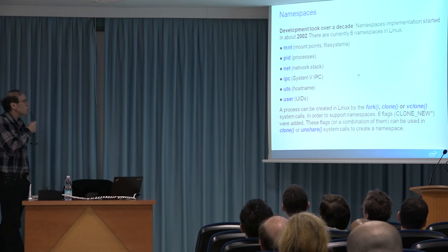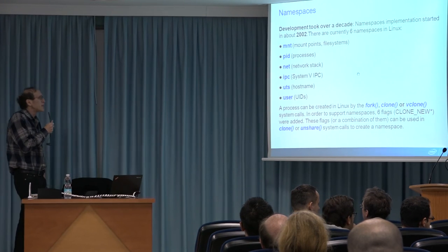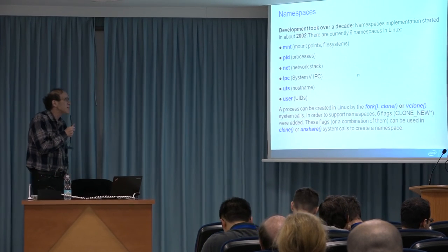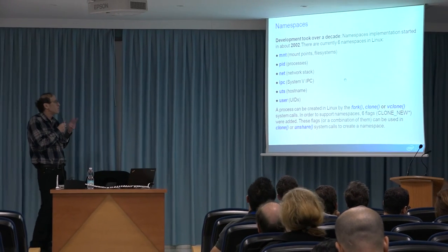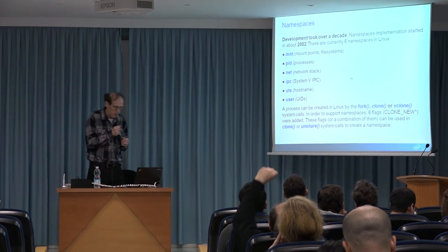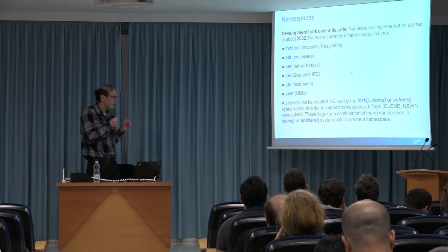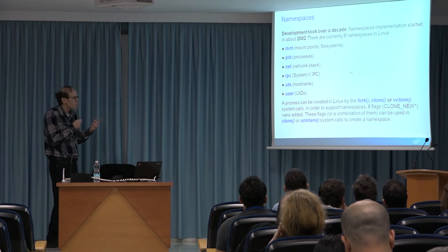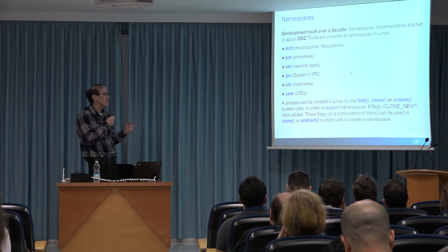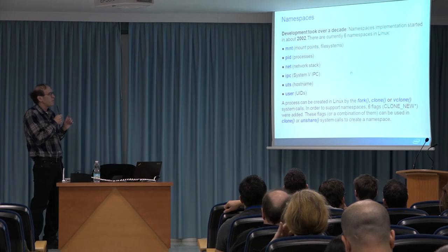I will continue now to talk about namespaces. Development of namespaces started over a decade ago. There are currently six namespaces in the kernel. There is development on a seventh one — there are patches in the mailing list, now the tenth iteration of the same patches, and I believe there will be a merge soon: a new namespace called Cgroup namespaces.